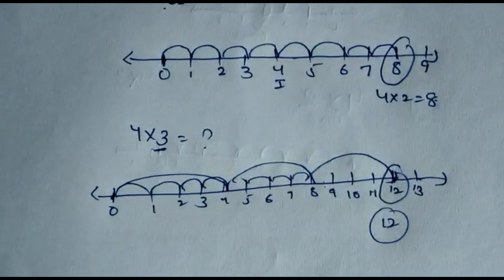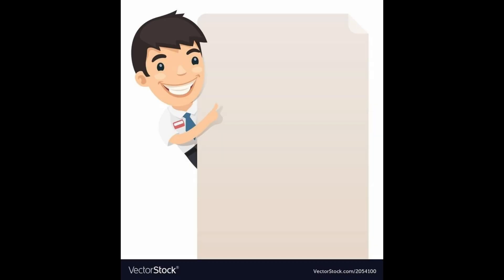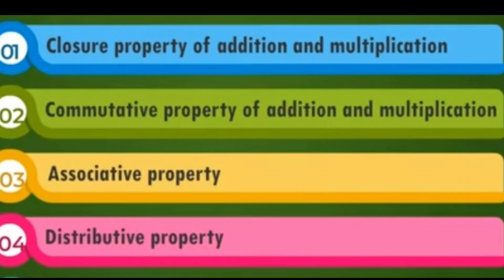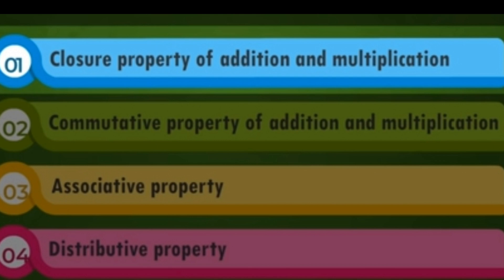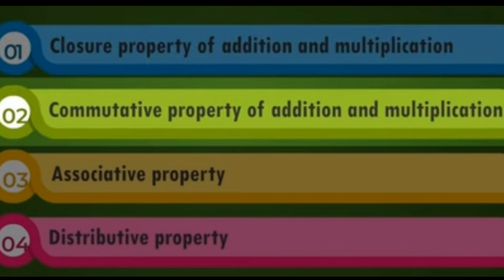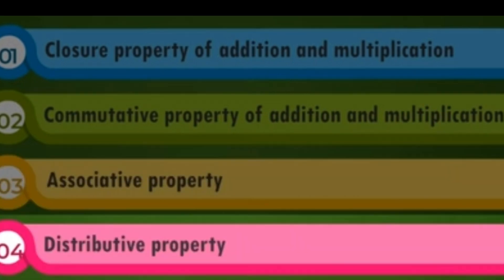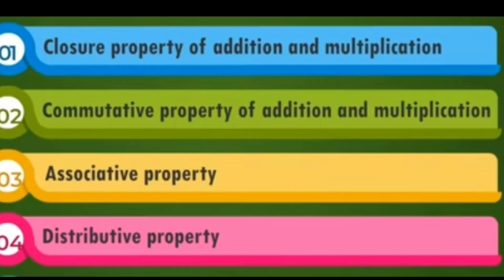Now the last and very important topic: properties of whole numbers. The first property is the closure property of addition and multiplication. The second is the commutative property of addition and multiplication. The third is the associative property. The last is the distributive property. Let us discuss all these properties individually one by one.